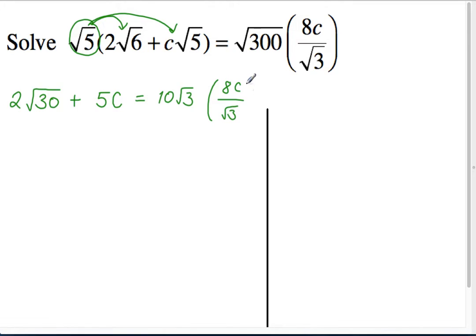Excellent. So now we can see, we can probably, on the left-hand side, I don't see anything we can do. There's nothing to collect. There's no perfect square factors of 30.